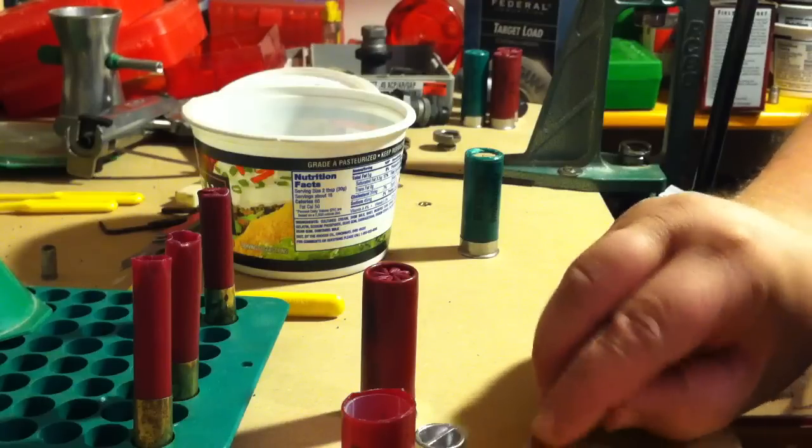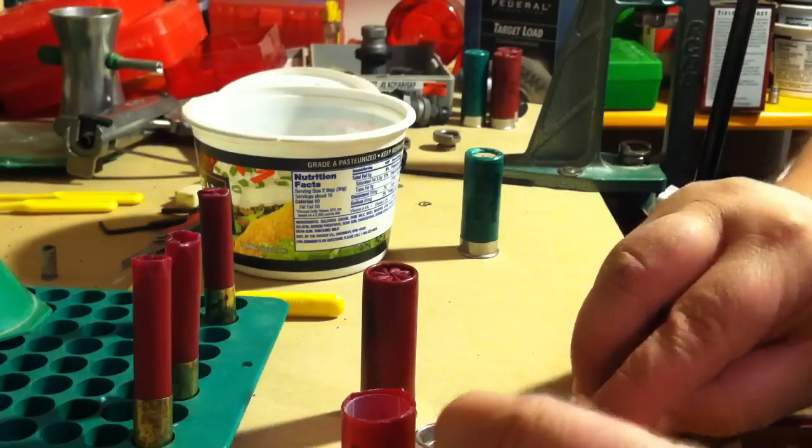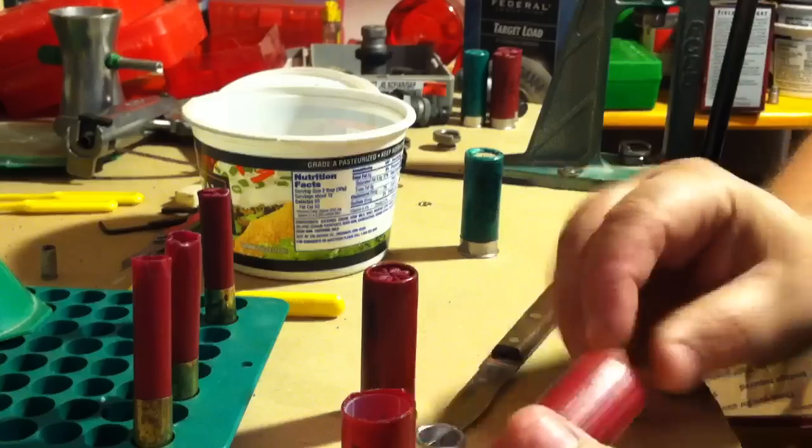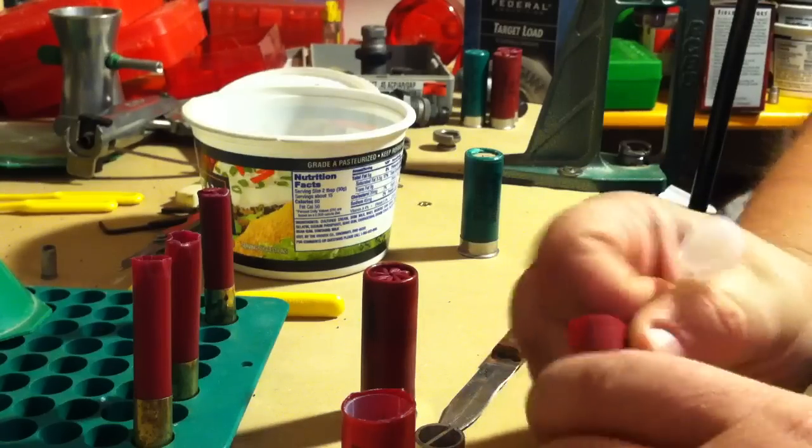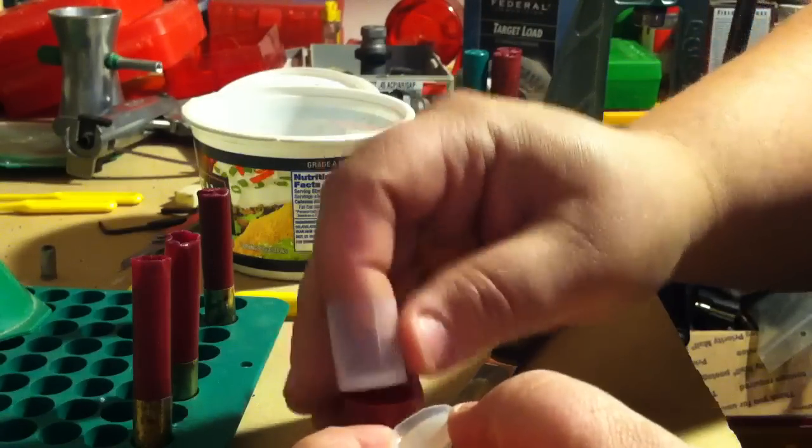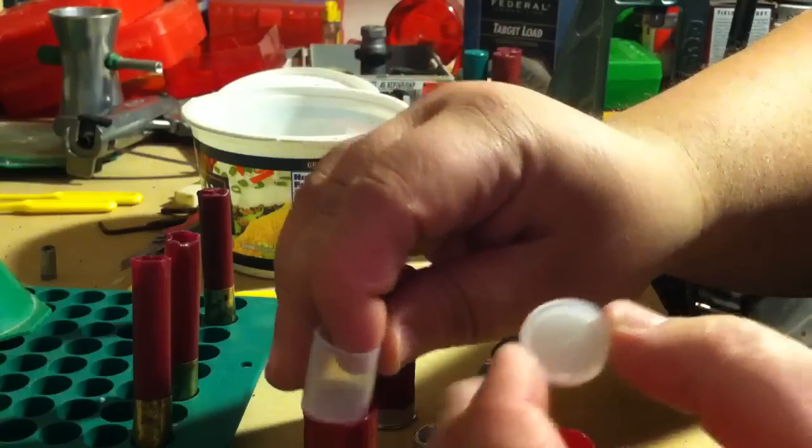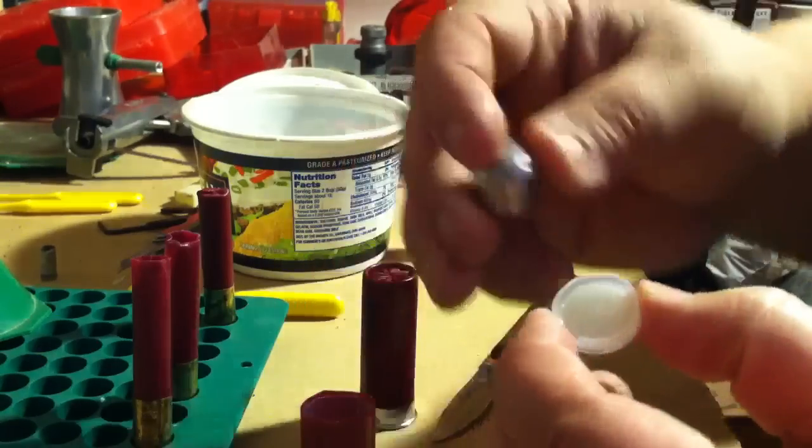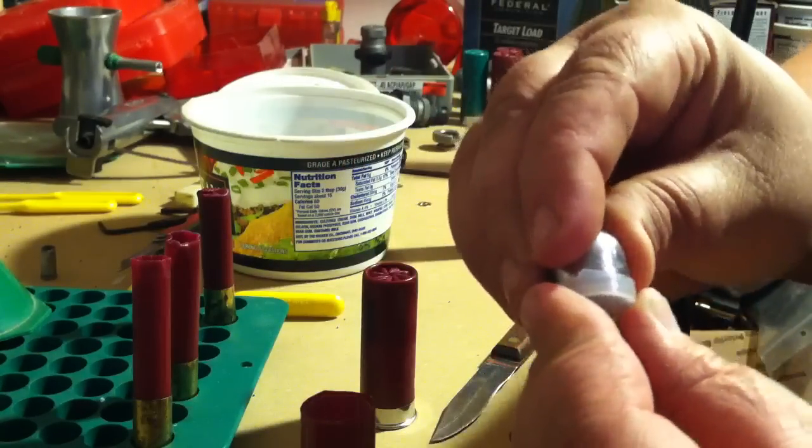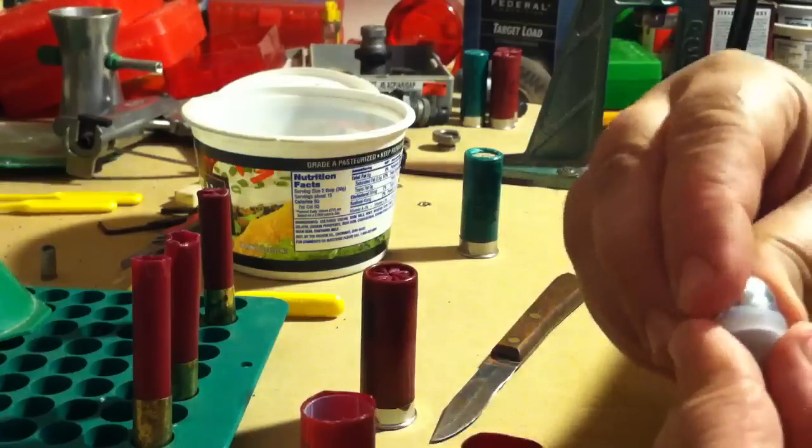I'm leaving just the base plate of the wad. I cut all the little wings off of it, leaving just enough of the sides so that my slug nestles in it. It doesn't quite hold or retain it, but I just set it in there.